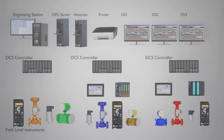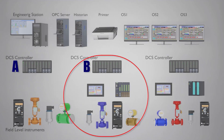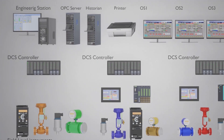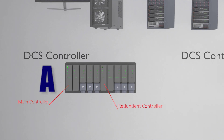In a DCS architecture, you would have a unique controller or control station for each area — let's say area A, area B, and area C. For area A, you have one control station. In that control station, you have two controllers: one is the main controller and one is the redundant one. In the case of failure of the main controller, the redundant controller will take over. So in each area in a DCS network, you have one main controller and one acting as redundant.